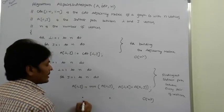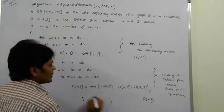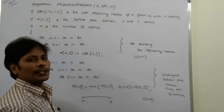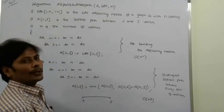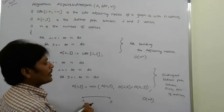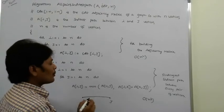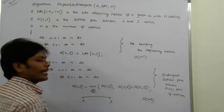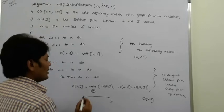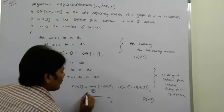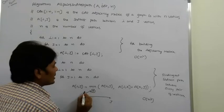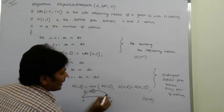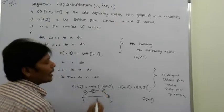The logic is as follows: suppose we have to find the shortest distance between vertices i and j. This is a marginal problem, which can be divided into two sub-problems by taking the intermediate vertex k. The first sub-problem is finding the shortest distance between i and k, and the second sub-problem is finding the shortest distance between k and j.